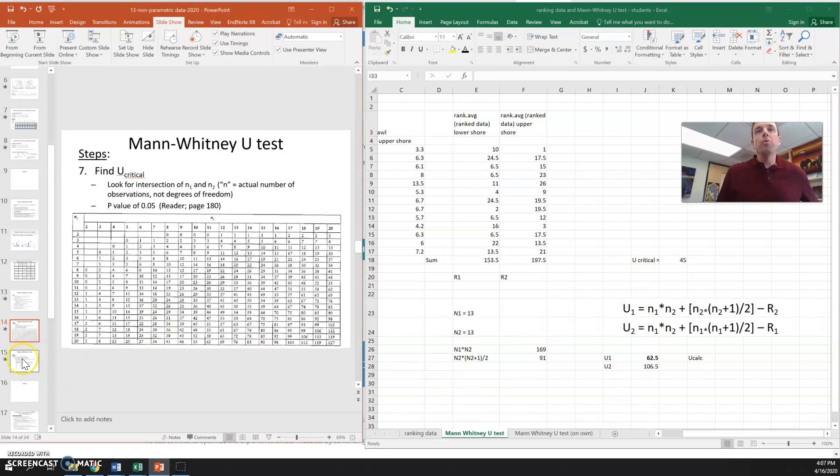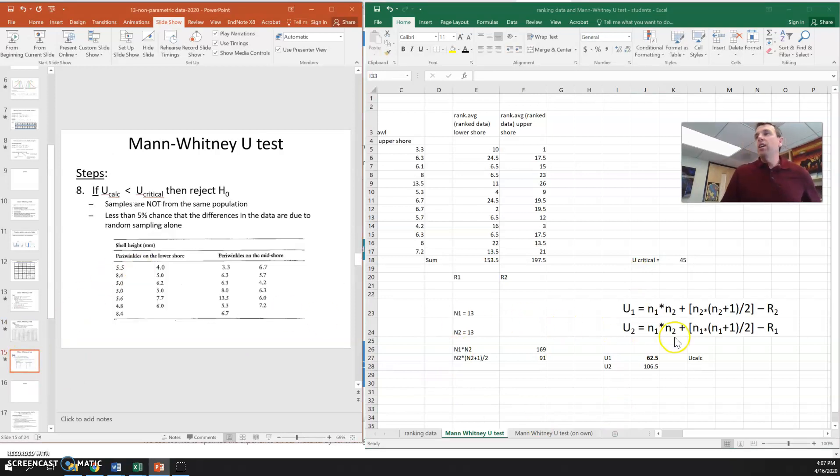So now the rule is that if U calculated is less than U critical, you rejected the null hypothesis. But in this case, my U calculated, the smaller one of these, is larger than my U critical. So I cannot reject the null hypothesis. These two groups are not statistically significantly different.